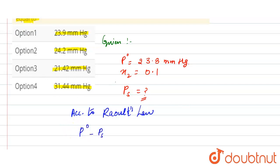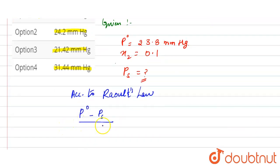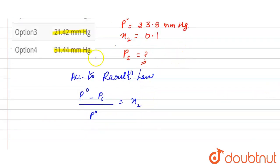(P⁰ - Ps) / P⁰ equals the mole fraction. By putting the values in this formula: P⁰ = 23.8